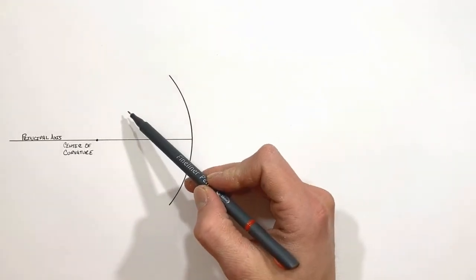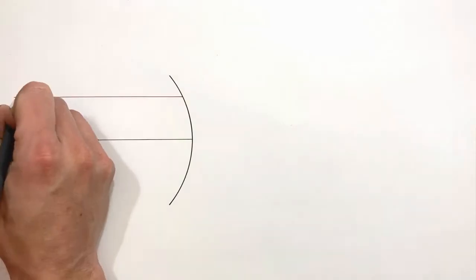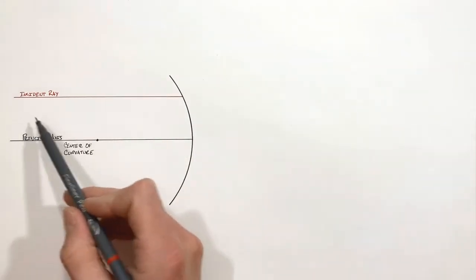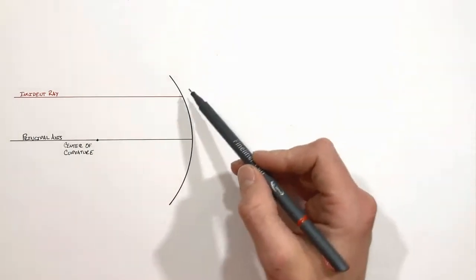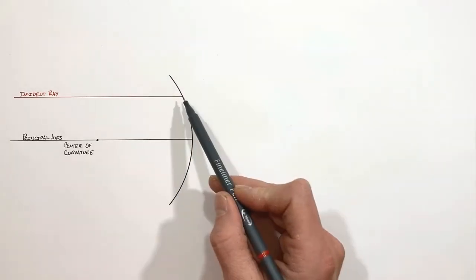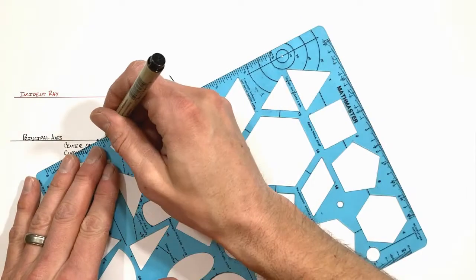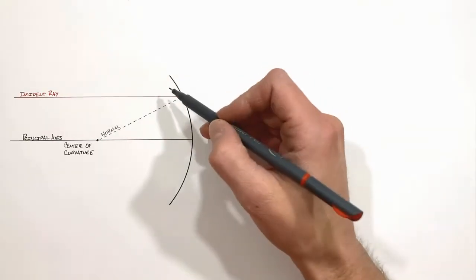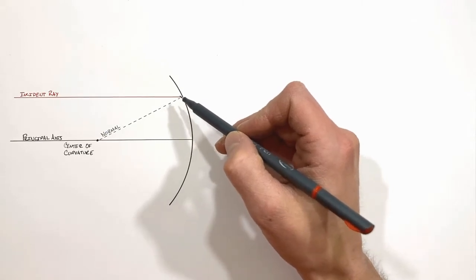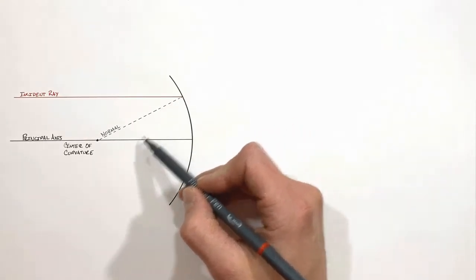Let's draw the first incident ray up here above the principal axis. Because the mirror is curved, light which is traveling parallel to the principal axis strikes the mirror at an angle. Because this mirror is a circle, the normal vector to the mirror is actually the radius vector of this circle. When light strikes a mirror, the incident angle and the reflected angle are equal, which means the reflected ray from this mirror will travel in this direction.